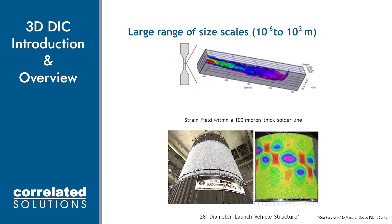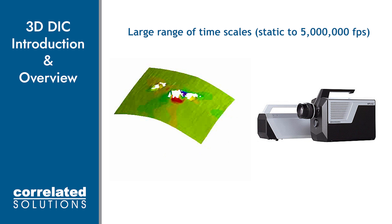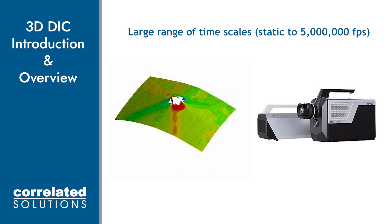Depending on the lenses and the optics used, we can get data for spacecraft launch structures, entire airplanes, and bridges, and also data within small biological samples like mouse arteries, and also within thin bonding lines like solders and adhesives. And with high-speed cameras, we are able to obtain data for explosive events, Hopkinson-Barr tests, or projectiles as shown here.